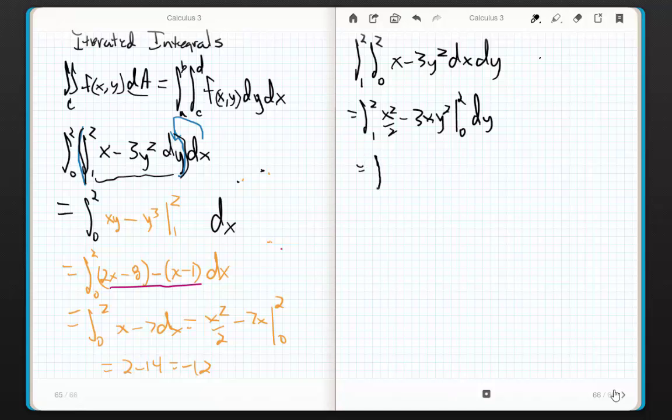So this is going to be equal to the integral from 1 to 2. Now I'm going to just do this in my head because the 0 makes it easy. 0 makes all this disappear. When I plug in the 2, I get 4 halves, which is 2, minus 6y² dy. And look at this. Now I'm back to where I started. 2y minus 2y³. That looks right. From 1 to 2.